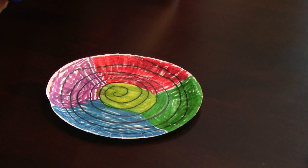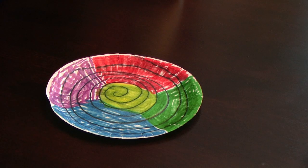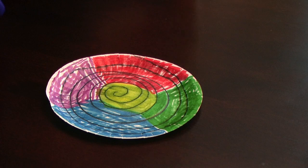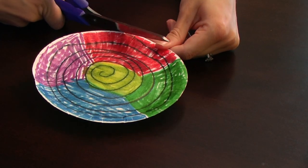The next step is to cut out your spiral. You're going to want to cut on the black line and get a good pair of scissors, and just start cutting it.